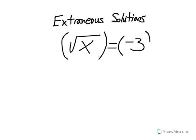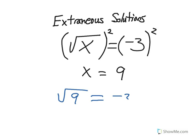and then squaring both sides, what we end up finding out is that x is equal to 9. However, when we go to check our solution, we find that the square root of 9 cannot equal negative 3.